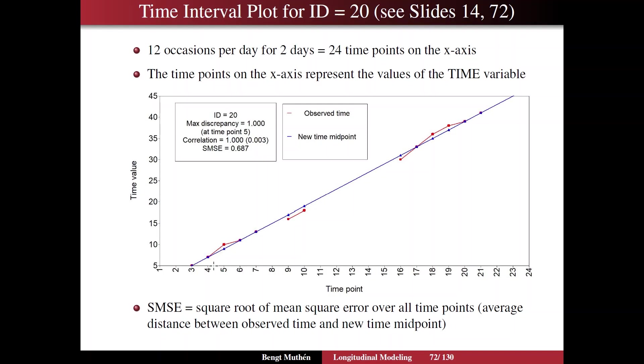And now the average, the SMSE here is the average discrepancy between the observed time and the new time midpoint across all the time points for this person. That's what we say down here. And we see some discrepancies also here. This is hours equals 16, where the midpoint is 17, so there's a discrepancy here, and hours 18 with midpoint 19 with a discrepancy there.